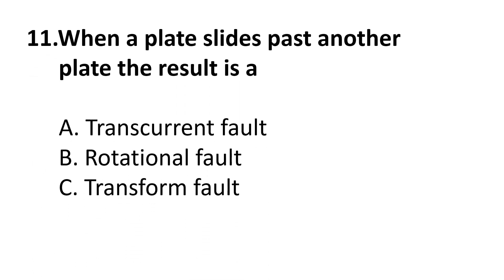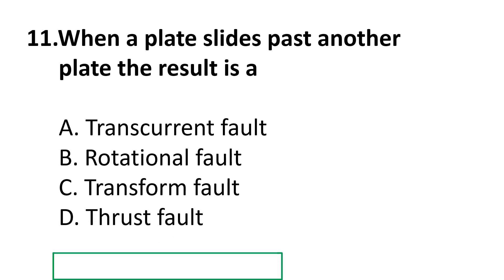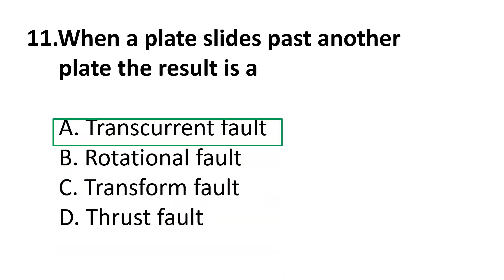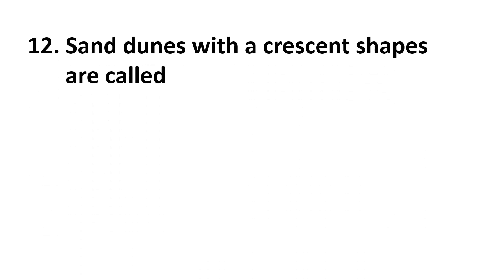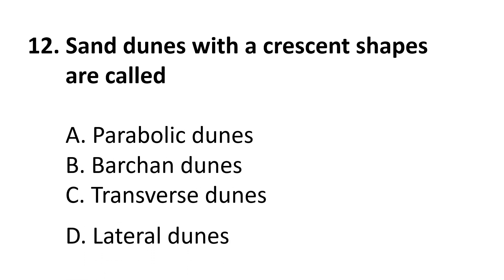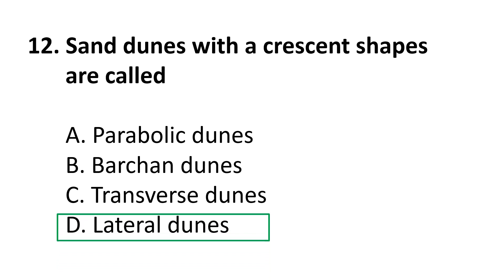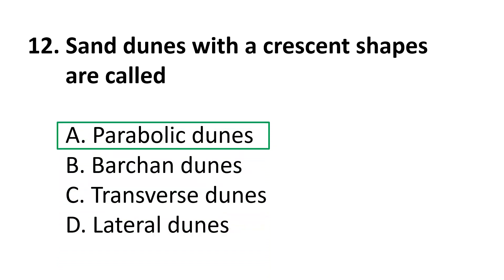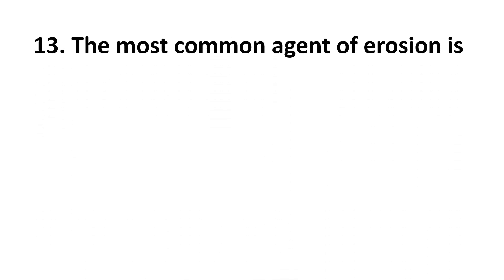The correct answer is A: fjords. Coming to the eleventh question: when a plate slides past another plate, the result is — A) transcurrent fault, B) rotational fault, C) transform fault, D) thrust fault. The correct answer is A: transcurrent fault. Coming to the twelfth question: sand dunes with a crescent shape are called — A) parabolic dunes, B) barchan dunes, C) transverse dunes, D) lateral dunes.